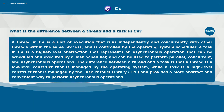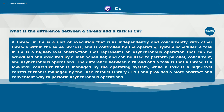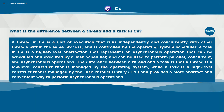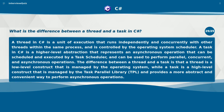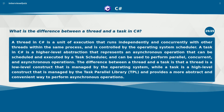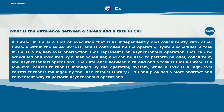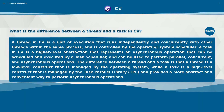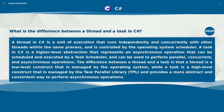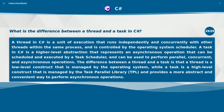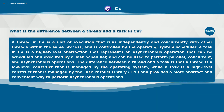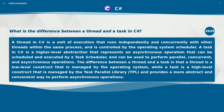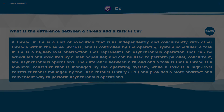What is the difference between a thread and a task in C#? A thread in C# is a unit of execution that runs independently and concurrently with other threads within the same process and is controlled by the operating system scheduler. A task in C# is a higher-level abstraction that represents an asynchronous operation that can be scheduled and executed by a task scheduler, and can be used to perform parallel, concurrent, and asynchronous operations. A thread is a low-level construct managed by the operating system, while a task is a high-level construct managed by the Task Parallel Library (TPL) and provides a more abstract and convenient way to perform asynchronous operations.